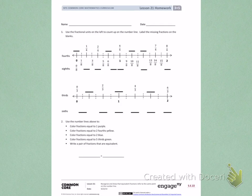This is Module 5, Lesson 21, Side 1. Today's objective was to recognize and show that equivalent fractions refer to the same point on a number line. Number 1. Use the fractional units on the left to count up on the number line. Label the missing fractions on the blanks.